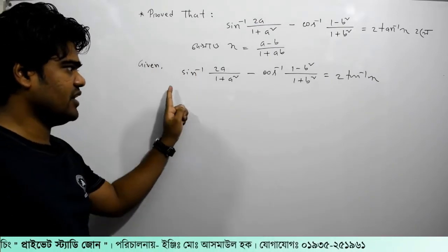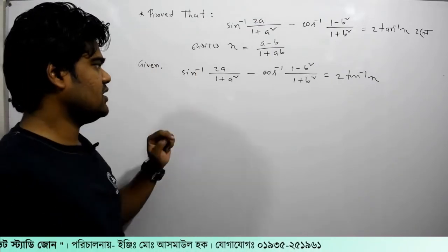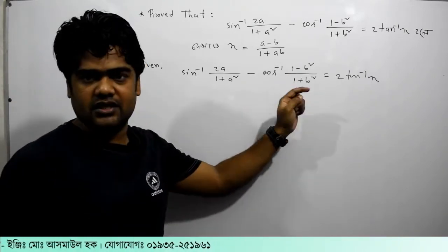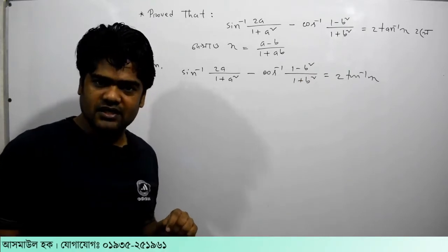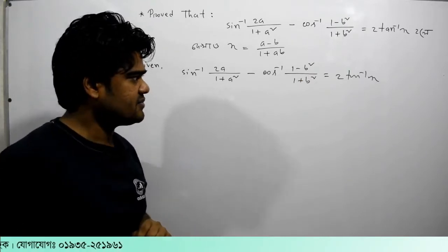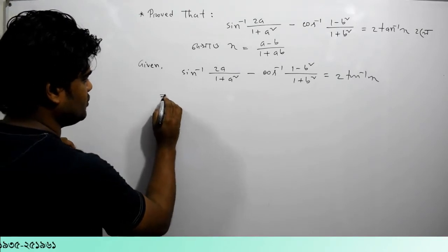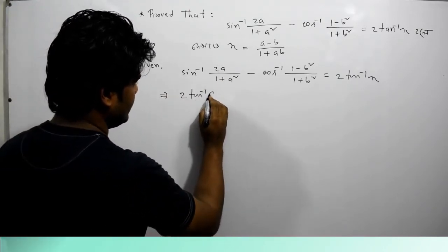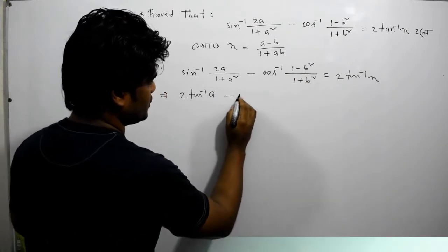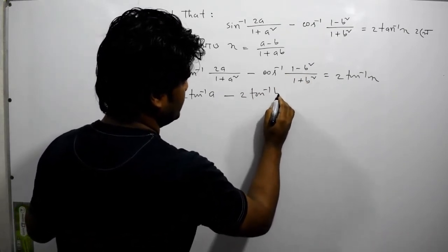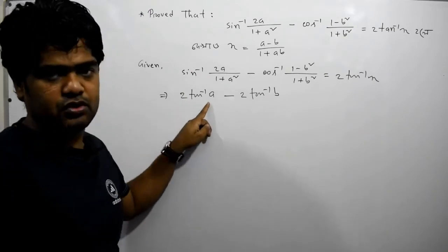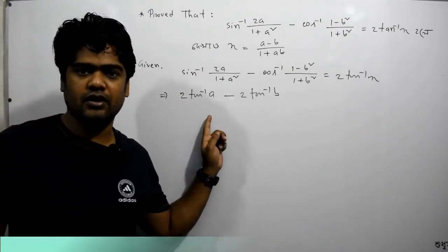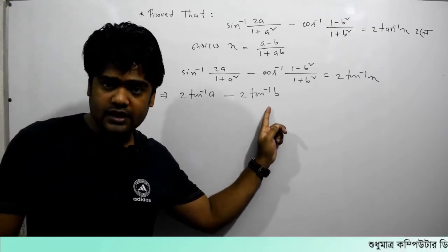sin inverse 2a divided by 1 plus a square, minus cos inverse 1 minus x square divided by 1 plus x square, equals 2 tan inverse a minus tan inverse x plus y divided by 1 plus x square. So 2 tan inverse x is 0.